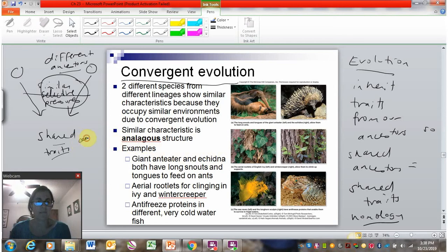The shared traits, the similar traits, are considered analogous structures. So they're analogous, not homologous. Homology is something we'll talk about in a different video, but we're going to compare analogous structures to homologous. Homologous is when it's from their shared ancestor.